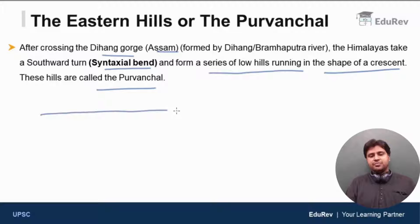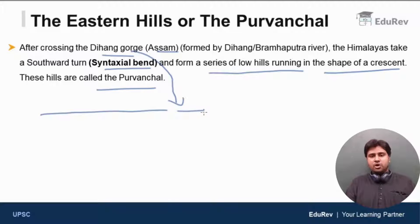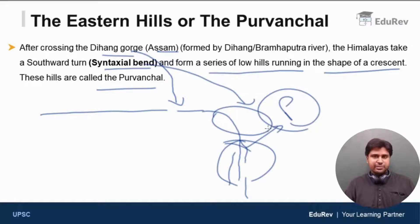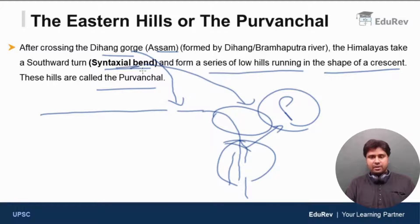All these hills together are called the Eastern Hills or Purwanchal. The Himalayas cross the Dihang Gorge and take a southward bend — this southward bend is called the Syntaxial Bend — and then form a chain of low hills. These low hills are the Purwanchal or Eastern Hills. After crossing the Dihang Gorge in Assam, they take a southward bend and run southwards, forming that chain of low hills.